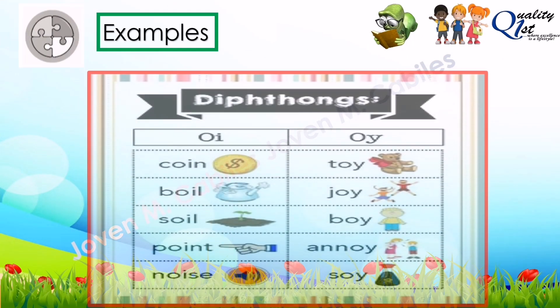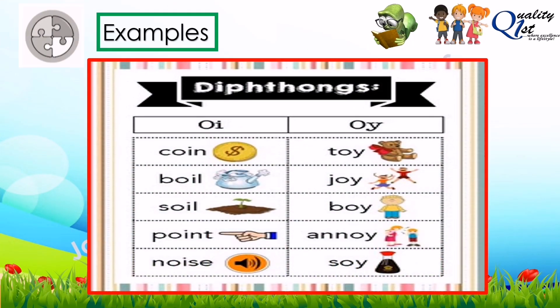Now we have the diphthongs OI and OY. For OI, we have: coin, boil, soil, point, and noise. For diphthong OY, we have: toy, joy, boy, annoy, and soy.